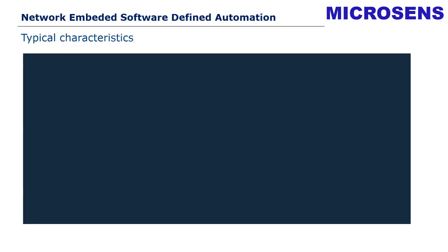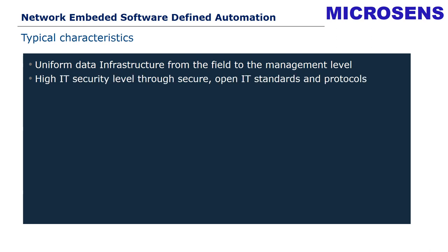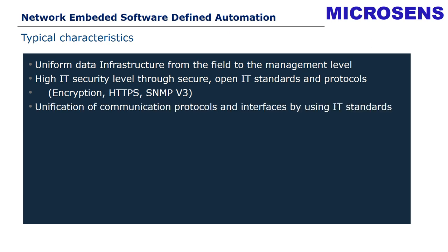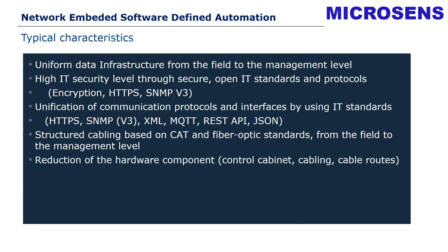Coming back to the characteristics: we have a uniform data infrastructure from the field to the management layer — this means we run only Ethernet from bottom to top. We have a high IT security level through secure, open IT standards and protocols, including encryption, HTTPS, and SNMP v3. The unification of communication protocols and interfaces using IT standards is given. We have structured cabling based on Cat and fiber optic standards from the field to the management level, and a reduction of hardware components — control cabinets, cabling, and cable trays.